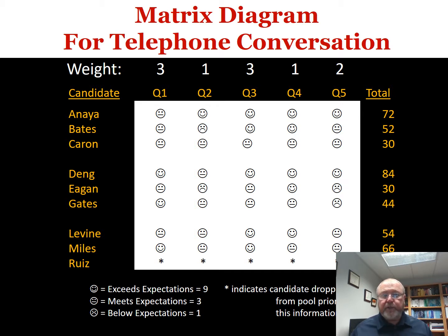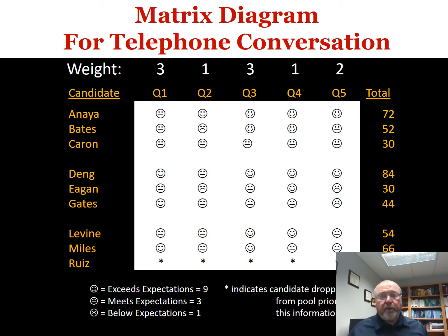For the next stage, we had a telephone conversation with the remaining candidates, asking five questions each with differential weights: 3, 1, 3, 1, 1, 2 — again determined using nominal group technique. Anaya looked good with 72; Deng, who looked very good the first time, scored even better at 84. Carone and Egan each had a 30; Ruiz had already dropped out. Notice we are accumulating information as we go — it's never about only the most recent phase, always about the accumulation.